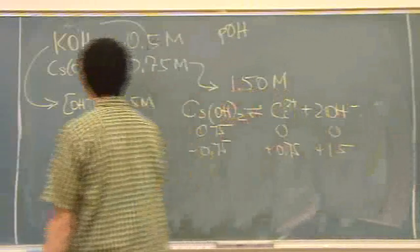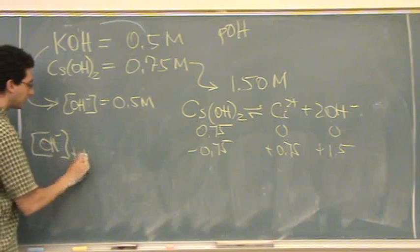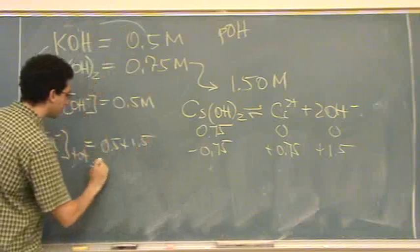So the sum of these two numbers, the overall OH minus total, is 0.5 plus 1.5, or 2 molar.